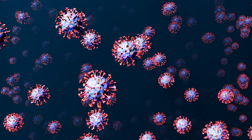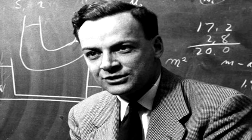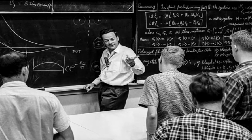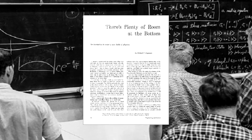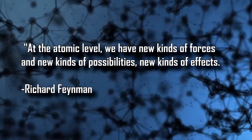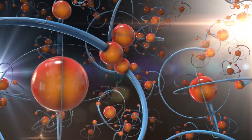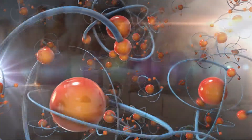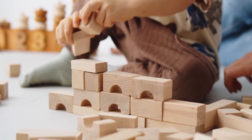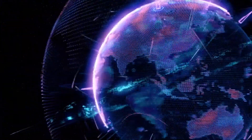You might be thinking: why would we even need to build machines on such a minuscule level? This is Richard Feynman, widely considered to be the father of nanotechnology. In his 1959 lecture 'There's Plenty of Room at the Bottom,' he states that at the atomic level we have new kinds of forces, new kinds of possibilities, and new kinds of effects. Our entire world is made up of atoms — the smallest form of matter and the building blocks of our reality.